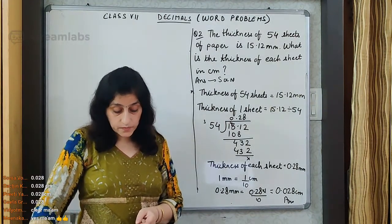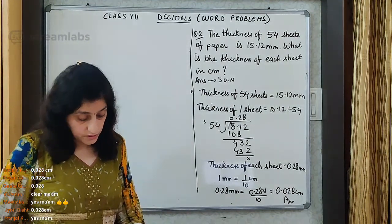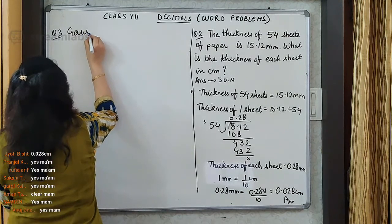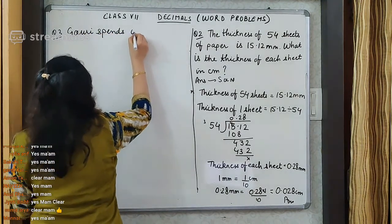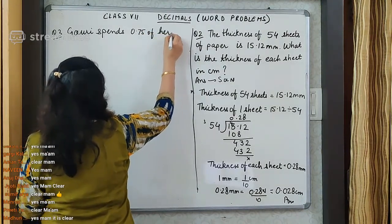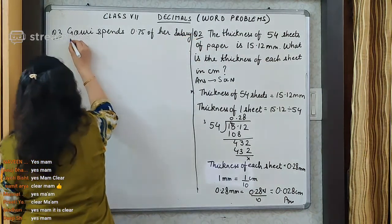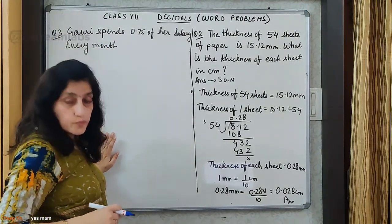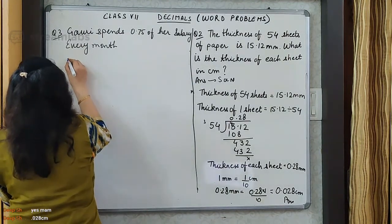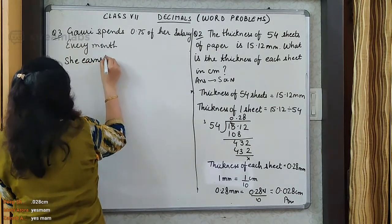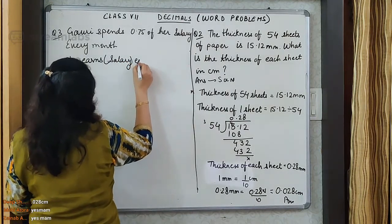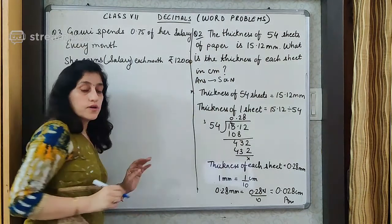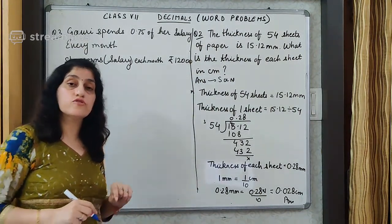Now let's begin with the next question. Gauri spends 0.75 of her salary every month. She earns — in bracket, salary — she earns each month rupees 12,000. Now in the question it is asked: in how many months will she save rupees 39,000?